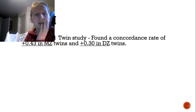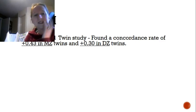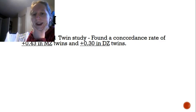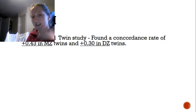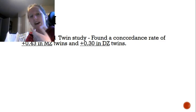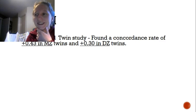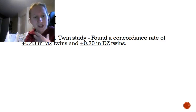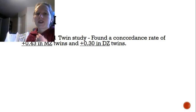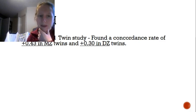The first study is McGue et al., a twin study. In MZ twins — identical twins — there was a 0.43 concordance rate, and a 0.3 rate in non-identical twins. The rate for identical twins is a little higher, which suggests that genes do play a part, because you find a higher rate in identical twins compared to non-identical twins who don't share the same genes.